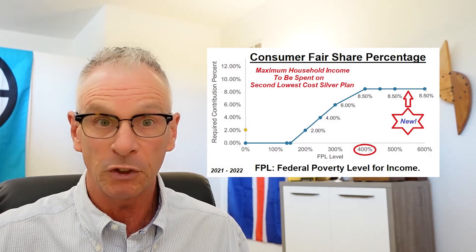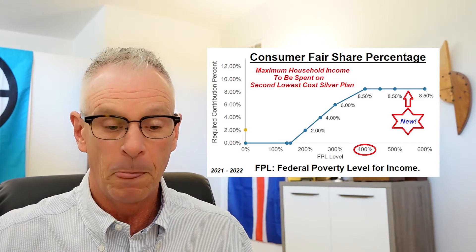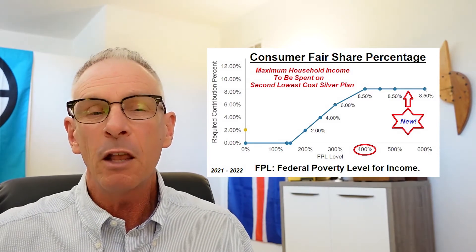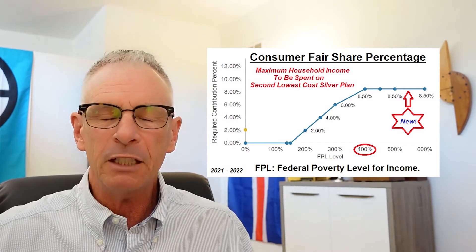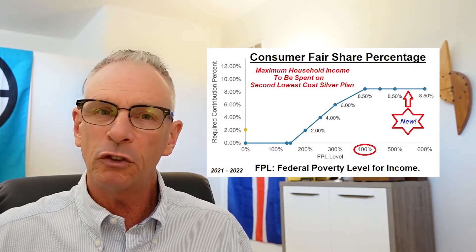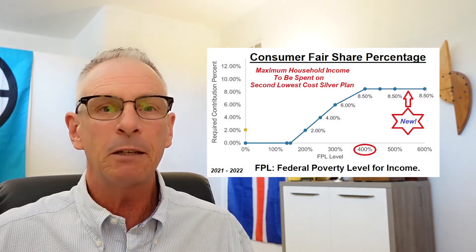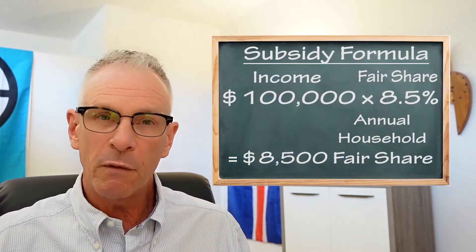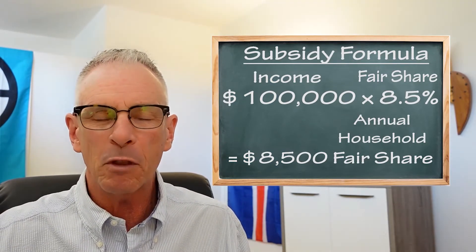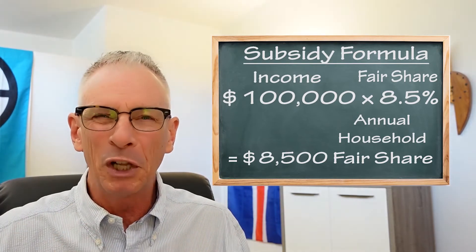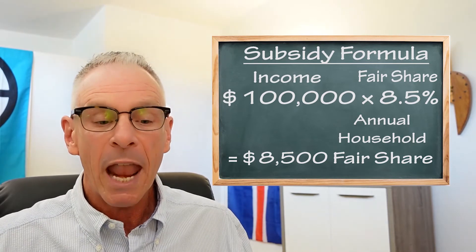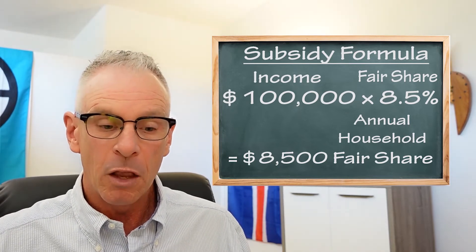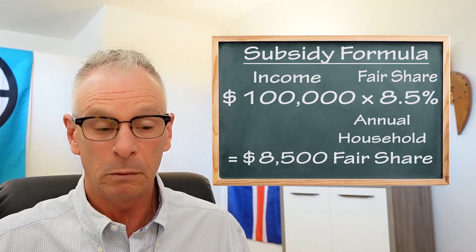You can see it's between 2 and 3% of their household income that should be spent on health insurance. The single individual at 400% of the federal poverty level — their consumer fair share is about eight and a half percent. Now, that doesn't mean that they're going to spend that much; this is just for the subsidy calculation. The subsidy that is determined can be spent on any metal tier level offered in the exchange. So going back to the first step, with an income of $100,000 and a fair share percentage of 8.5%, you multiply those two together and the fair share for that household is $8,500.